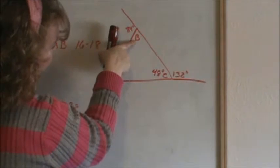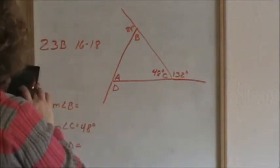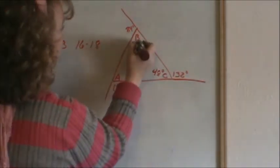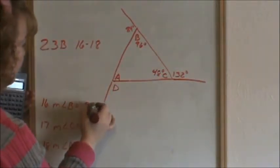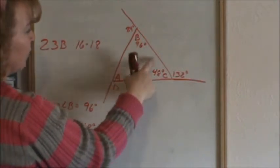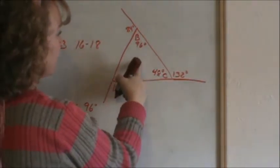So can we figure out angle B? Yes, because these two angles are supplementary. So supplementary to 84 degrees would be 96 degrees. So we know that angle B is 96 degrees. How many degrees are there in a triangle? 180. There's 180 degrees in a triangle.